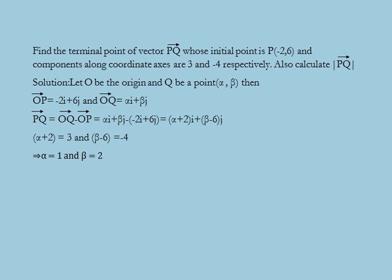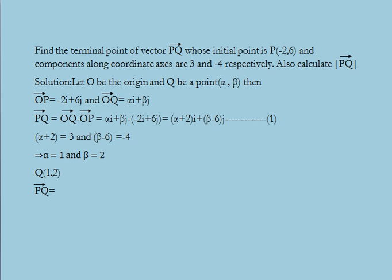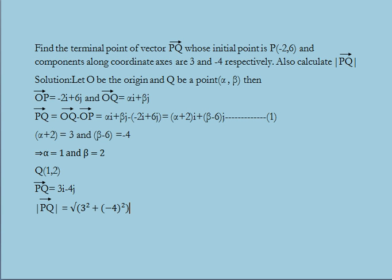This implies alpha equals 1 and beta equals 2. Hence the terminal point Q has coordinates 1, 2. Now vector PQ equals 3i minus 4j. Therefore the modulus of this vector equals the square root of 3 squared plus minus 4 squared, which equals 5. Thus the terminal point of vector PQ is Q with coordinates 1, 2, and the modulus of vector PQ equals 5.